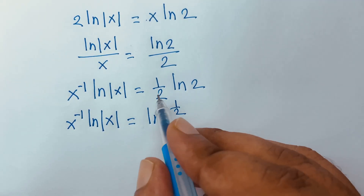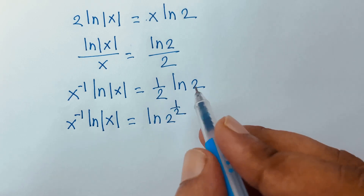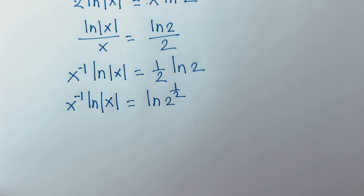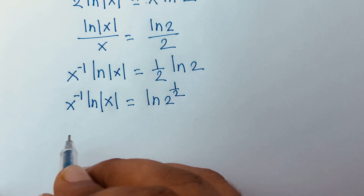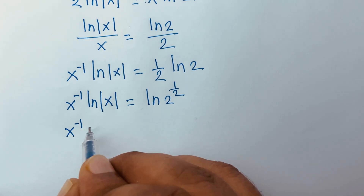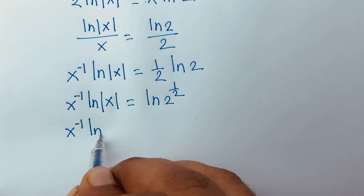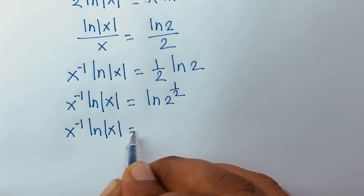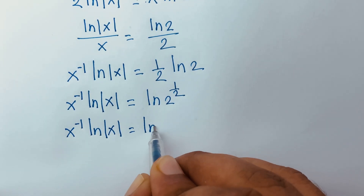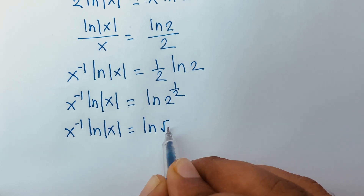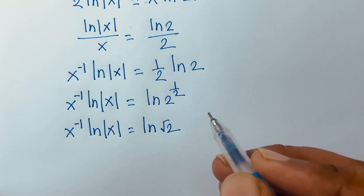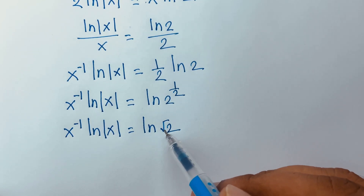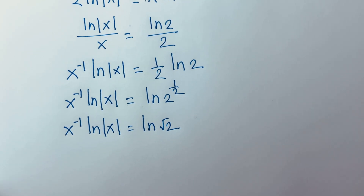I just move this half into the exponent. So I can say x to the power minus 1 times ln(x) is equal to ln(2 to the power one-half), which is ln(√2). You know that 2 to the power half is square root of 2.